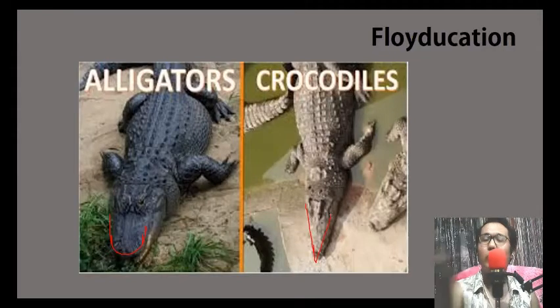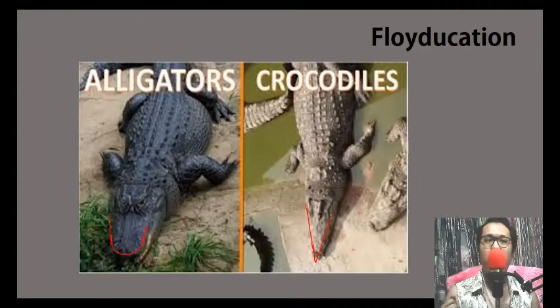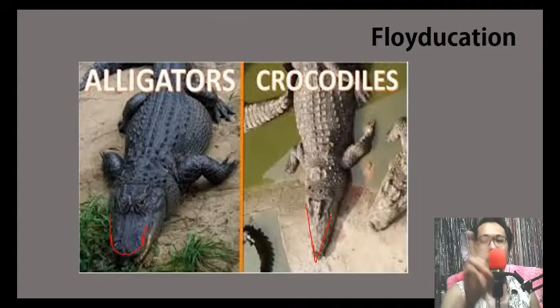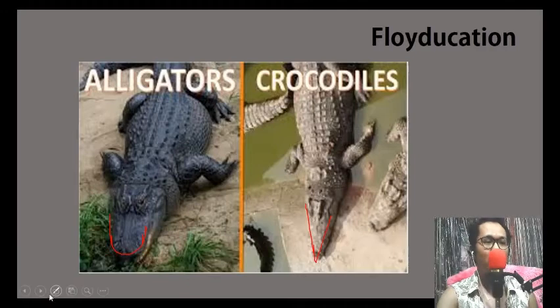Now, next time, if you will see a U-shaped animal, alligator or crocodile? That will be U-shaped alligator. V-shape, we have crocodiles. Simple as that. Next one.